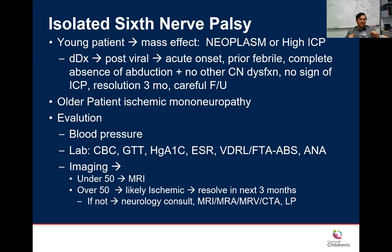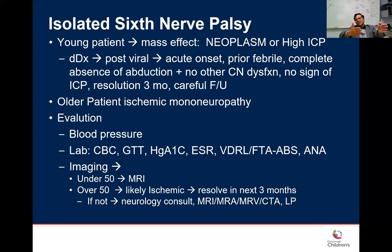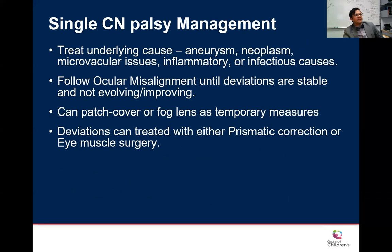If a patient has a sixth nerve palsy with esotropia measuring 30 prism diopters, on follow-up it should improve to 15 or 20. If they're still at 30 or worsening, image them. For management while waiting for recovery: if it's debilitating, you can patch one eye, or use frosted glasses with cellophane tape over one lens so they're more functional without a visible patch. Wait the full six months before considering strabismus surgery, to allow optimal recovery.